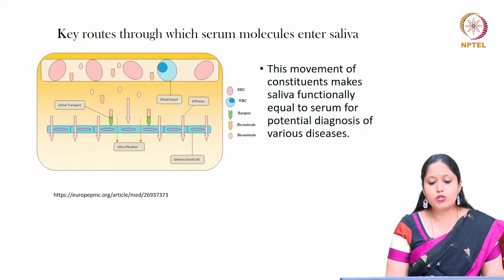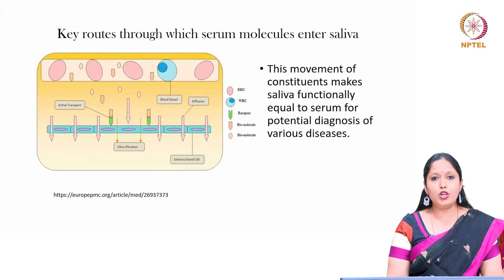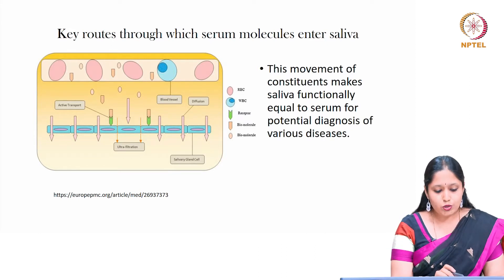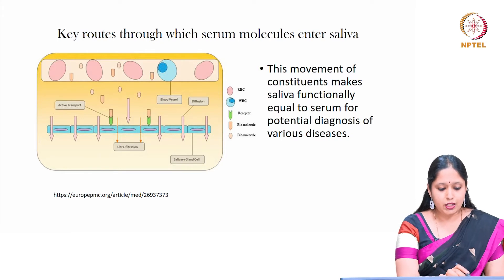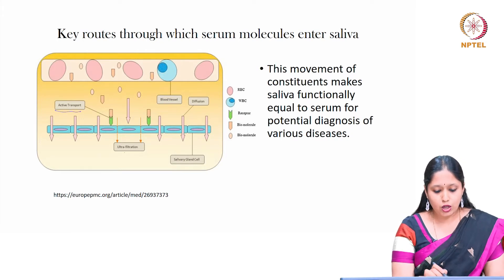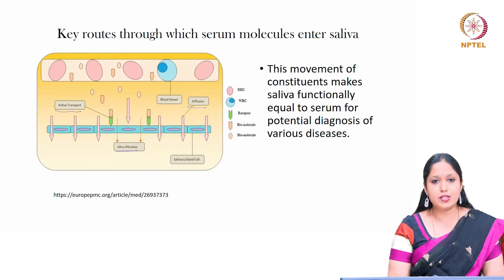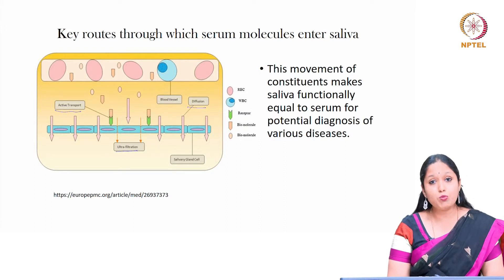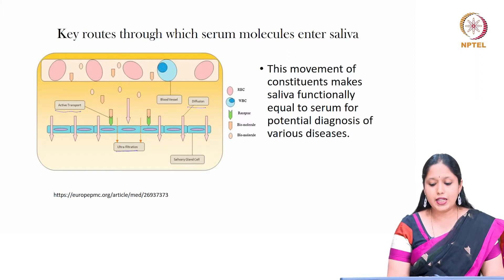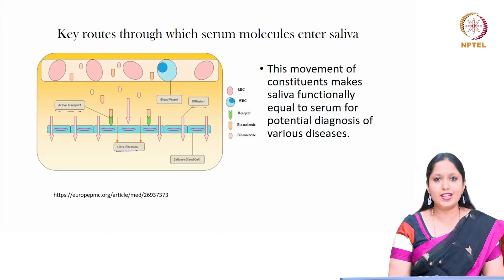Coming to the key routes through which serum molecules can enter saliva: serum molecules enter the salivary gland cell by active transport, ultrafiltration, or diffusion. They pass through the salivary gland cell and enter saliva, and this movement of constituents makes saliva functionally equal to serum for the potential diagnosis of various diseases.